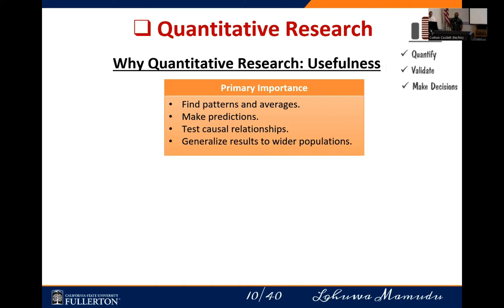A prediction example: does cholesterol level of an individual predict blood pressure level? Quantitative research also tests causal relationships — does glucose have impact on blood pressure? Does cholesterol have impact on blood pressure? Then it generalizes results to a wider population. Often this research uses a sample rather than the entire population, and at the end, we make generalizations to the entire population based on that sample.